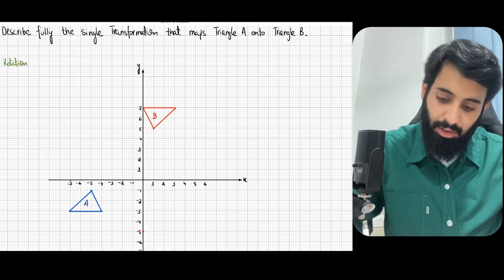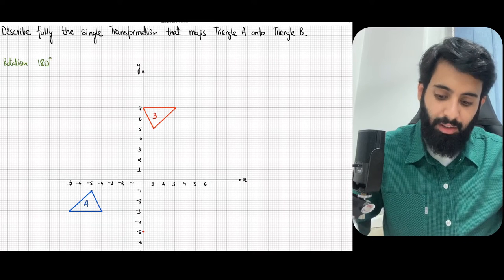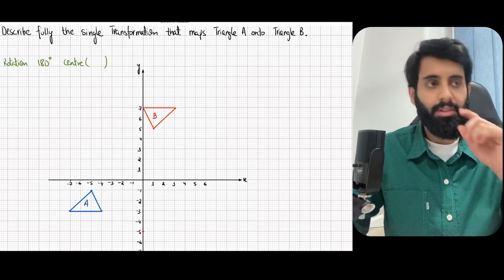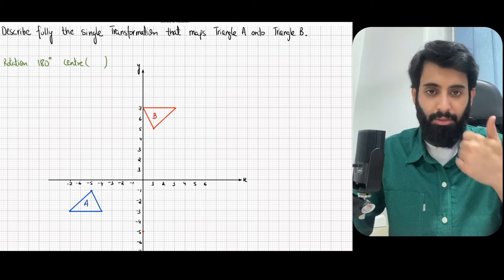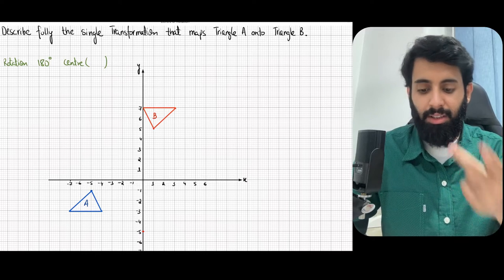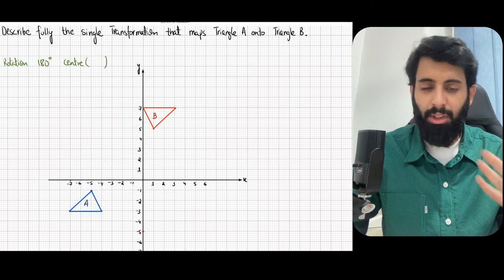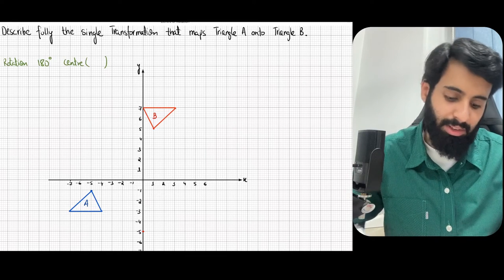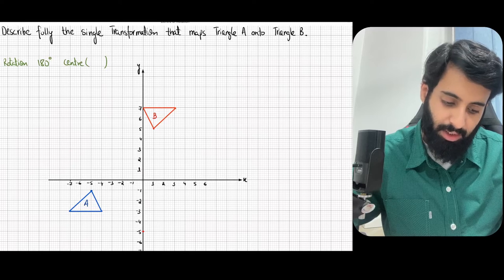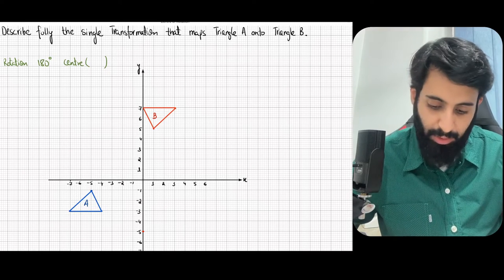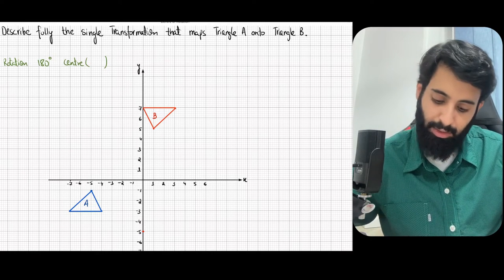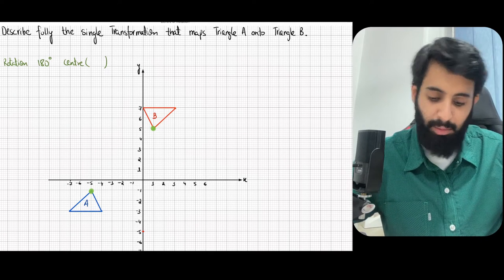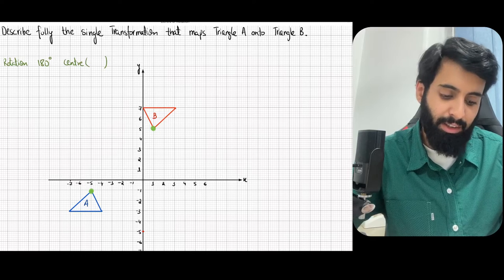This is rotation, 180 degrees. One missing piece is the center. Rotation is defined by the angle, the direction, and the center. With 180 degrees there's no need to write the direction because 180 degrees clockwise and 180 degrees anticlockwise are the same thing. What we do need to find is the center. Finding the center of rotation for 180 degrees is the easiest — in the first step you pick any one object point and its corresponding image point and join them with a straight line.